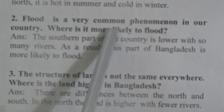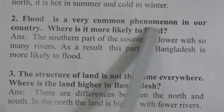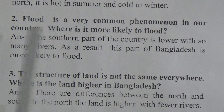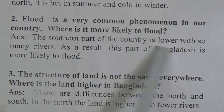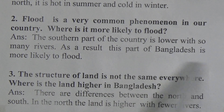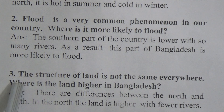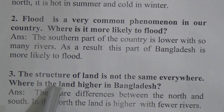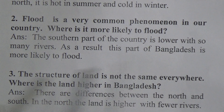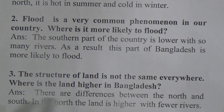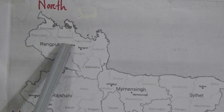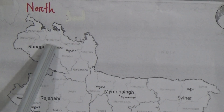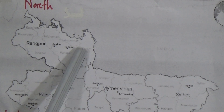To repeat: flood is a very common phenomenon in our country. Where is it more likely to flood? The southern part of the country is lower with so many rivers. As a result, this part of Bangladesh is more likely to flood. Question number 3: the structure of land is not the same everywhere. Where is the land higher in Bangladesh? The answer is: there are differences between the north and the south. In the north, the land is higher with fewer rivers. Student, follow this map — the north part has higher land and fewer rivers in that area.